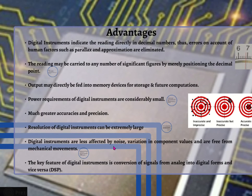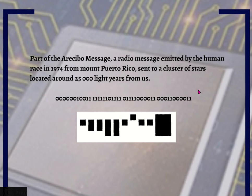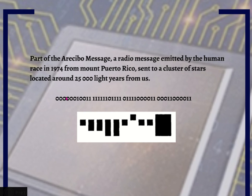Digital instruments are less affected by noise, variation in component values, and are free from mechanical movements. Digital instruments deal with highs and lows only — two discrete values — thus the chance of noise overlaying the signal is rare. This is demonstrated by the Arecibo message, a radio message emitted by the human race in 1974 from Puerto Rico, sent to clusters of stars located around 25,000 light years away. The digital message was composed in terms of zeros and ones, making it difficult for noise to mask.